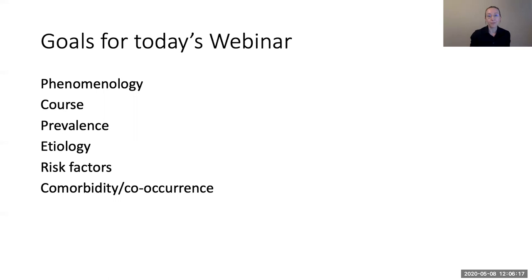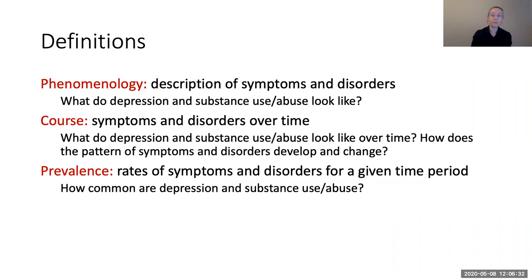My goals for today's webinar are to cover at a broad level the phenomenology, course, prevalence, etiology, key risk factors, and the comorbidity and co-occurrence of depression and substance use. A few definitions before we get going to make sure we're all starting on the same page. When I say phenomenology, I mean a description of symptoms and disorders — what do depression and substance use and abuse look like, and what are their characteristic and defining features?